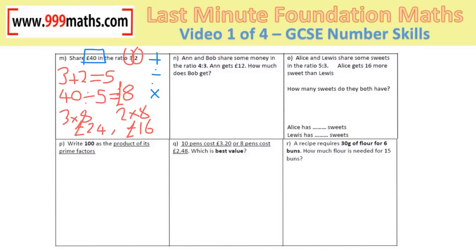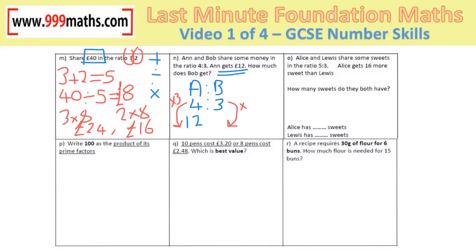The second type of ratio question doesn't give the total — it tells you one person's amount. Ann and Bob share in the ratio 4 to 3, and Ann gets £12. Ann's ratio share has been multiplied by 3, so do the same with Bob and multiply his by 3, giving £9 for Bob.